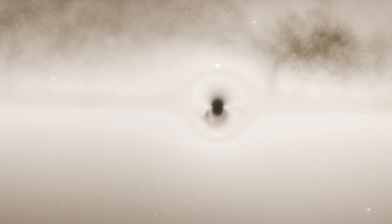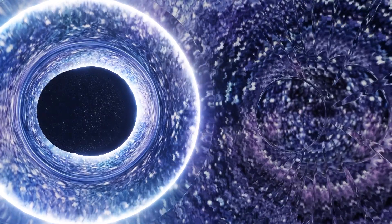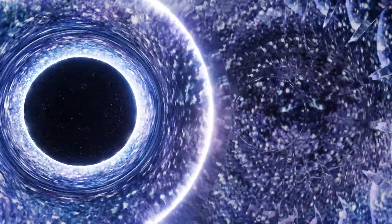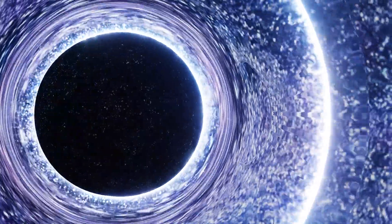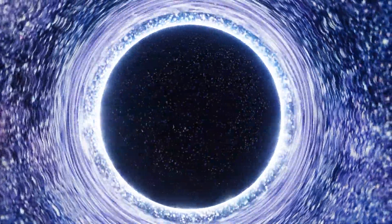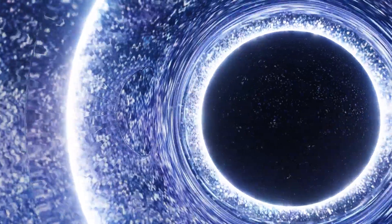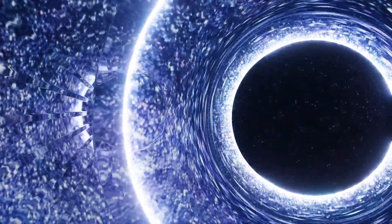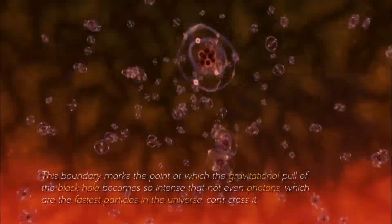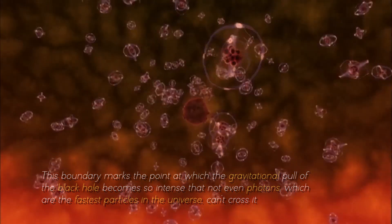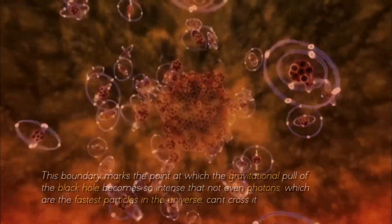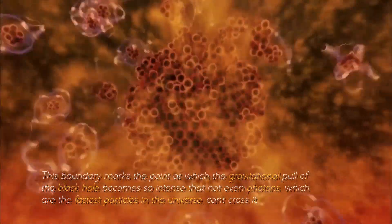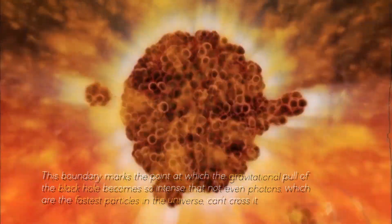This finding challenges the conventional understanding of how black holes work. A fundamental characteristic of a black hole is its event horizon, an invisible boundary beyond which escape becomes impossible, even for light. This boundary marks the point at which the gravitational pull of the black hole becomes so intense that not even photons, which are the fastest particles in the universe, can cross it.